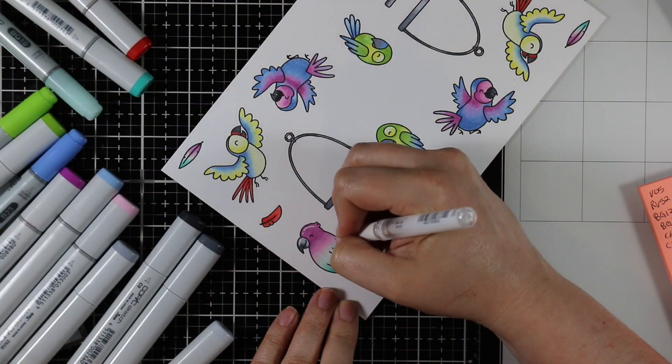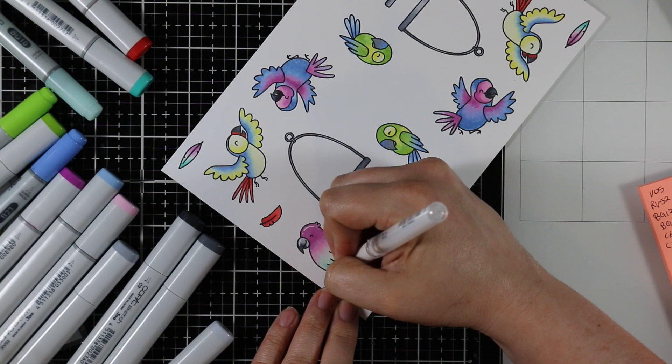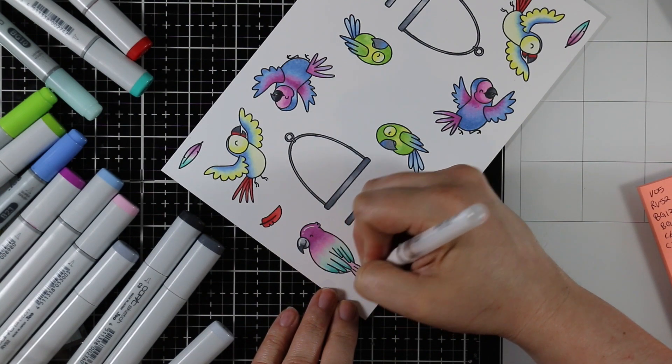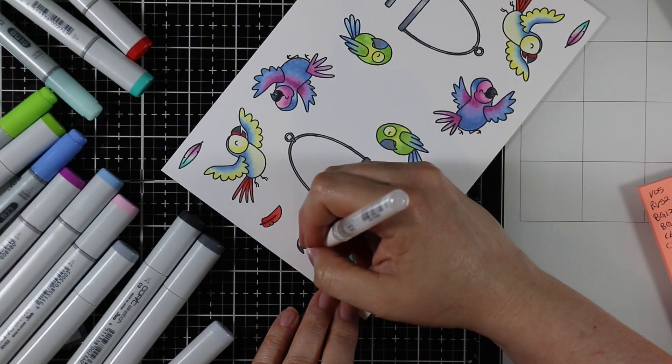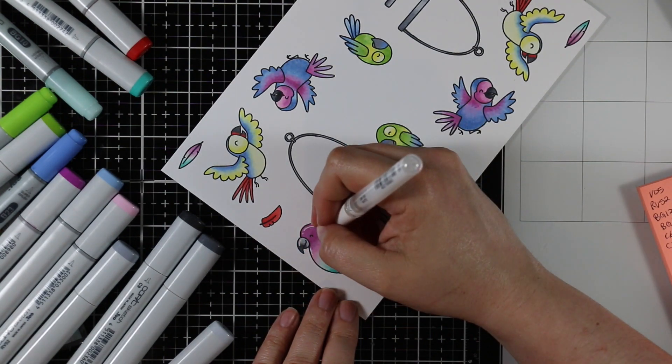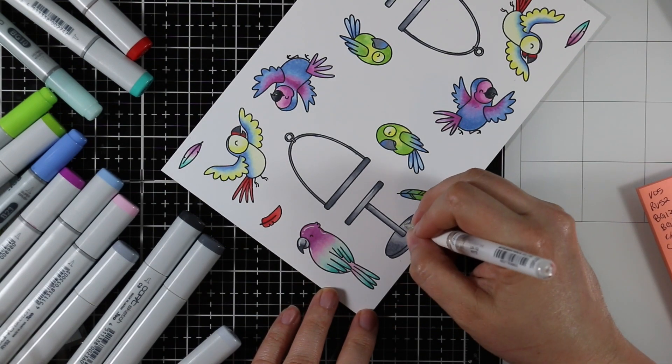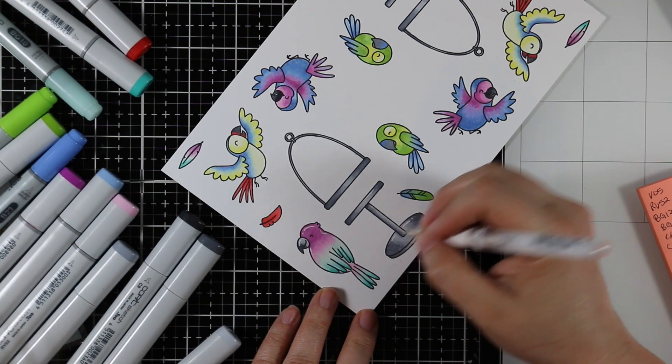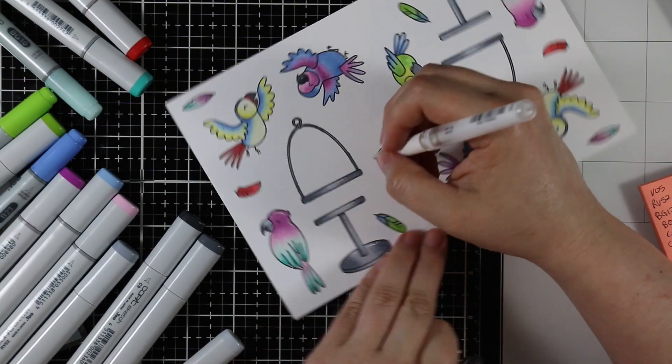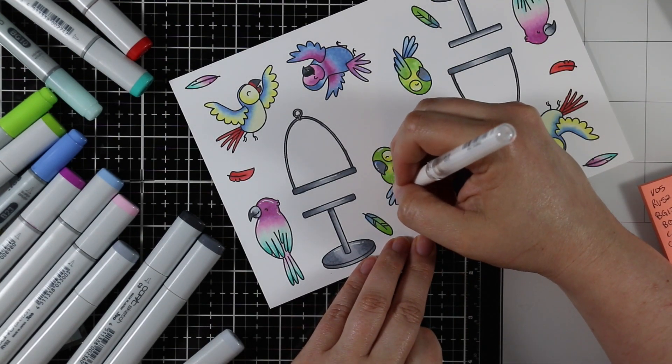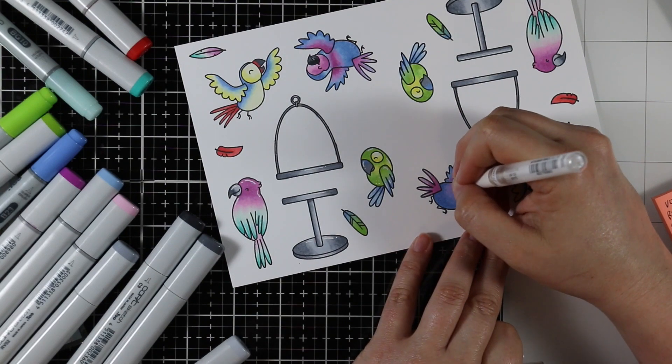Once I was done all of my coloring I went in with just a white gel pen and added a bunch of highlights. That's something else I get asked a lot about. For the most part I'm just adding highlights wherever, I'm not really following a light source or anything like that. I just like adding the little white highlights just to give that pop and add a little bit of texture.